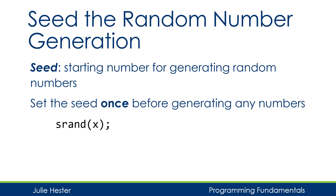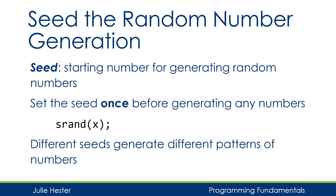srand does have one parameter. Here I put an x as the parameter, but it's going to be whatever the value of our seed is. When we call srand with different values we're using different seeds, and they're going to generate a different pattern of numbers.